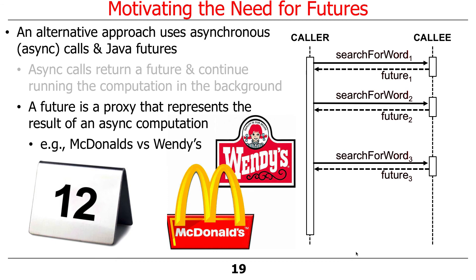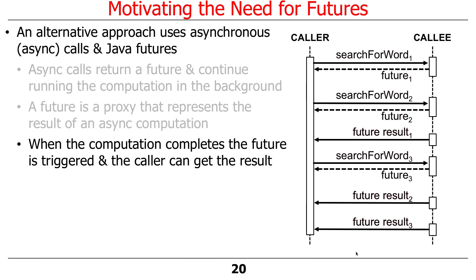There are a couple of ways to pick up your food once you have a future. One way is to periodically walk back to the pickup window, show your table tent number, and ask if order 12 is ready — that's the polling model. If yes, you get your food; if no, you can go back to your table. Another way is for them to come out and call you — that's the callback model. In classic Java, simple futures use a polling or timed-polling model via a method called get.